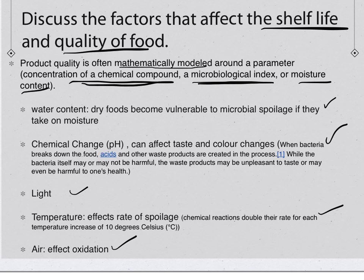The first factor is water content. Dry foods — think crackers or cereals — will spoil faster if they take on moisture from the air. Once they absorb that moisture, microbes start to grow. Chemical change, such as a change in pH, is another factor. When bacteria breaks down food, acids and other waste products are created.